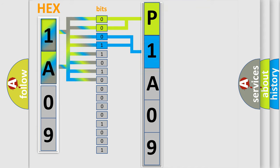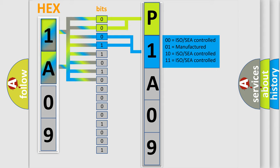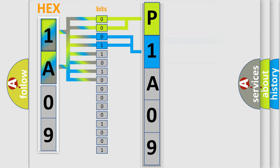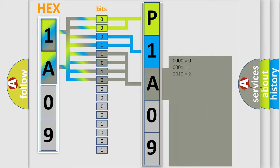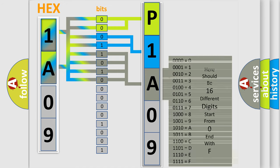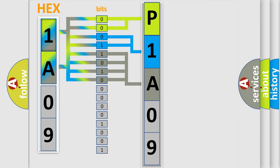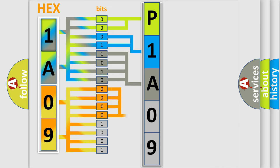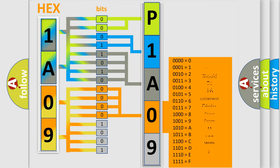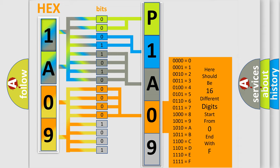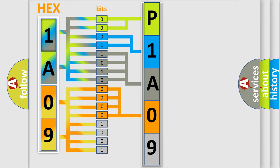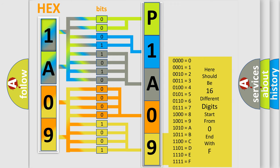The next two bits again determine the second character. The last bits of the first byte define the third character of the code. The second byte is composed of a combination of eight bits. The first four bits determine the fourth character of the code, and the combination of the last four bits defines the fifth character. A single byte conceals 256 possible combinations.